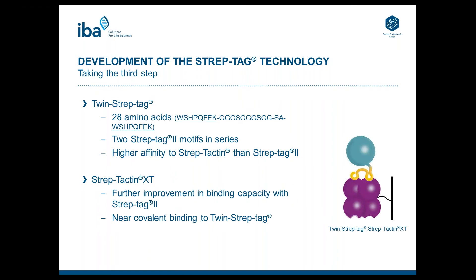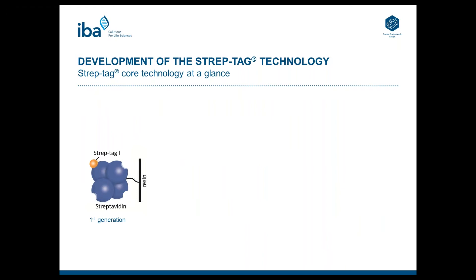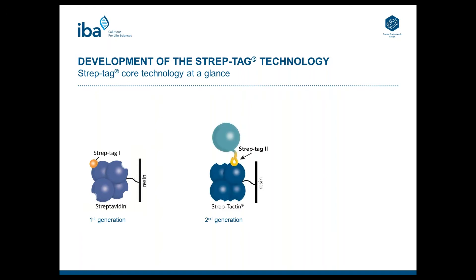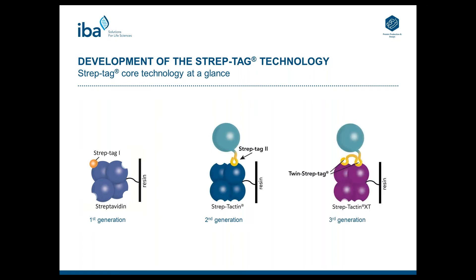In combination with the Twin StrepTech, Streptactin XT has a near-covalent binding affinity which allows sufficient capture of a broad range of protein classes, low abundant proteins, and assay applications. In the next slide I have an overview on the StrepTech core technology. The first generation was StrepTech 1 in combination with Streptavidin. The second generation consisted of StrepTech 2 with Streptactin, and the third generation is now Twin StrepTech with Streptactin XT.